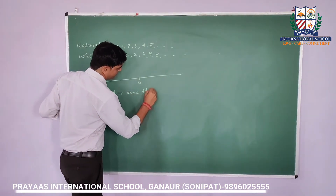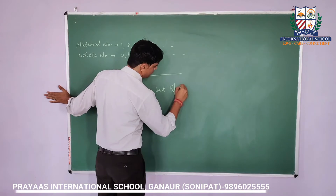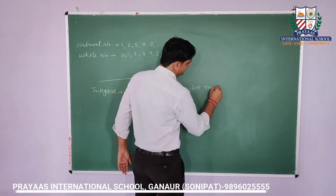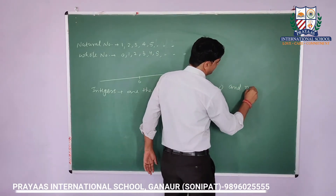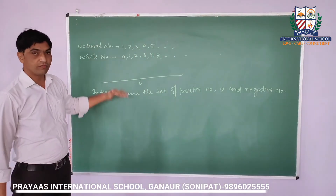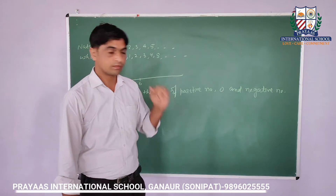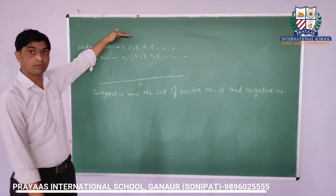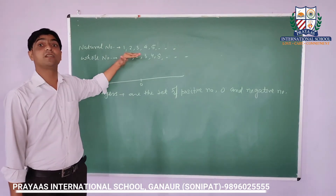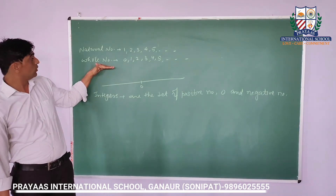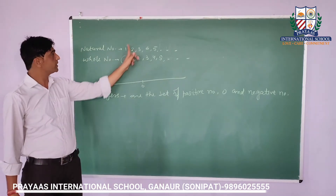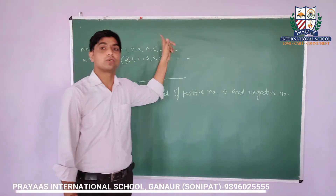The set of positive numbers means natural numbers, then zero, and then negative numbers. From here we can conclude: all natural numbers are whole numbers, but the converse need not be true. Whole numbers are not all natural numbers, because zero is not present in the natural numbers. So the converse need not be true.